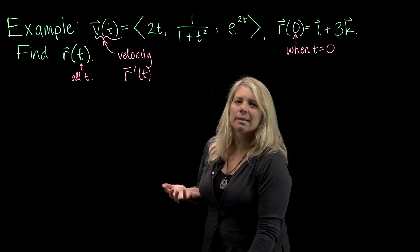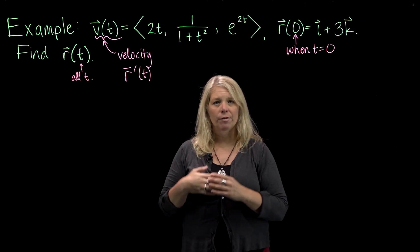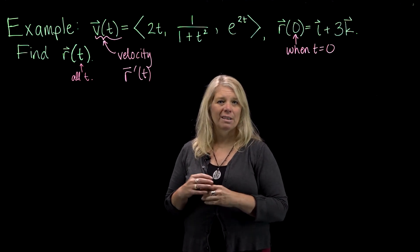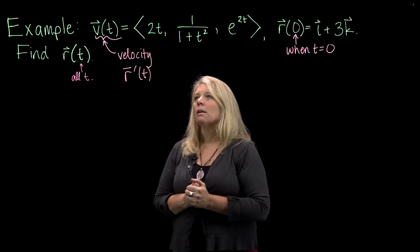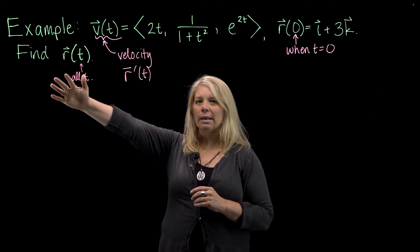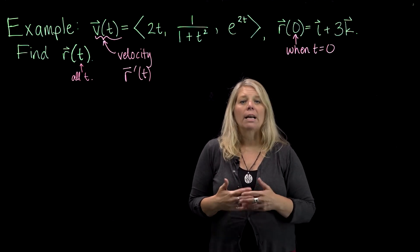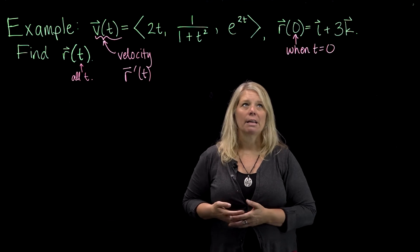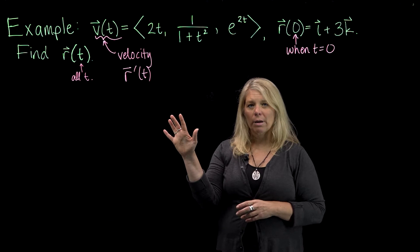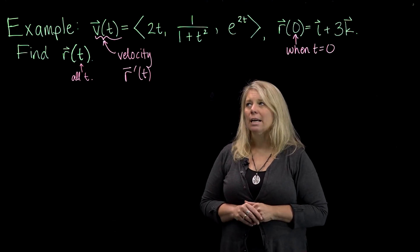Even if you hadn't seen a problem like this, you should be able to put together knowledge from Calculus 1 with what you've been working with in vector-valued functions to think about how to do this. You're essentially given a derivative function and you want to find the original function, so you need to undo that derivative — find antiderivatives, indefinite integrals.